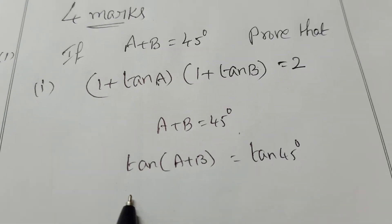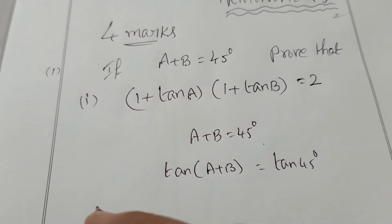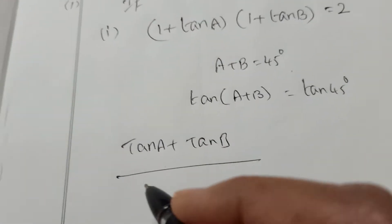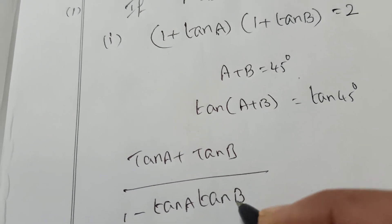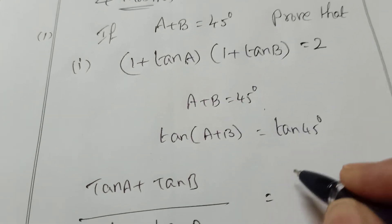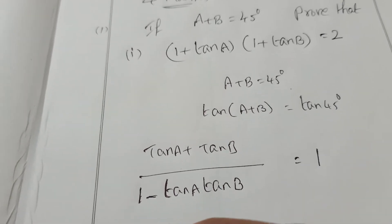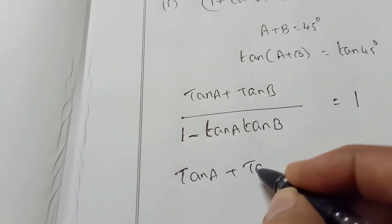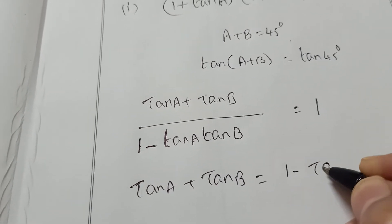Recall the formula: tan of A plus B equals tan A plus tan B divided by 1 minus tan A tan B. This equals tan 45° which is 1. Now taking cross multiplication, you get tan A plus tan B equal to 1 minus tan A tan B.